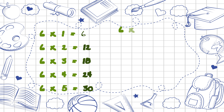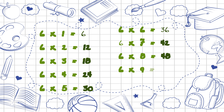Six sixes are thirty-six. Six sevens are forty-two. Six eights are forty-eight. Six nines are fifty-four. Six tens are sixty.